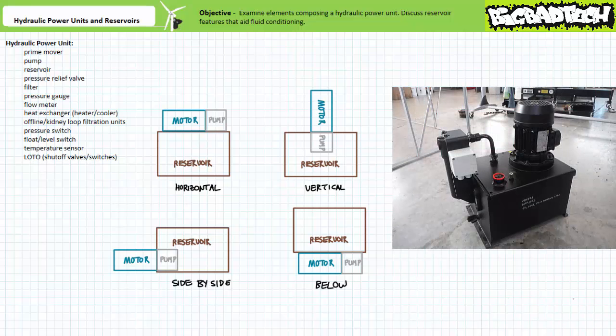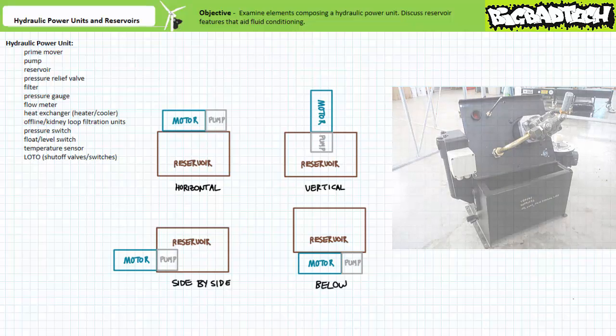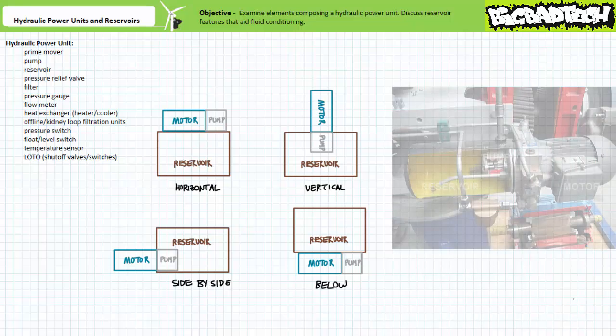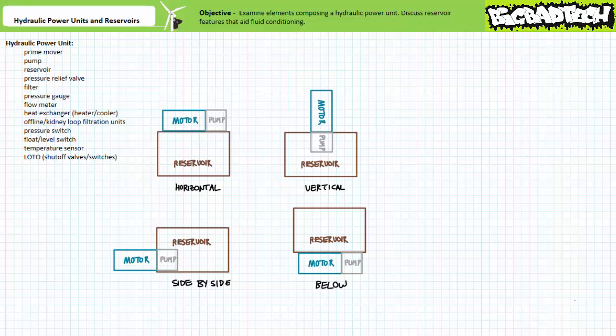Additionally, the prime mover and pump can be vertically mounted on the reservoir. Here's an example of a vertically mounted configuration with a pump internal to the reservoir. When partially disassembled, you can see the pump. The prime mover and pump can also be mounted to the side of the reservoir, as is often the case for small hydraulic power units. Here's a cutaway example of a side-by-side configuration showing the external motor and the pump inside the reservoir.